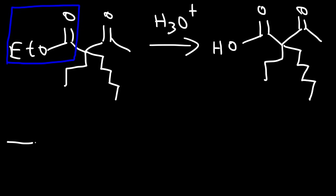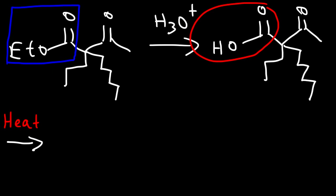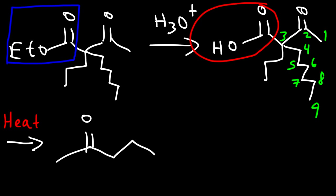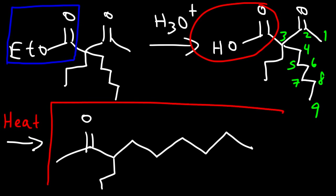For the last step, we add heat and remove the carboxylic acid functional group. Let's identify the longest chain: 1, 2, 3, 4, 5, 6, 7, 8, 9 — so we have a 9-carbon chain. Attached to carbon 3, we have a propyl group. So this is the ketone for this particular reaction.